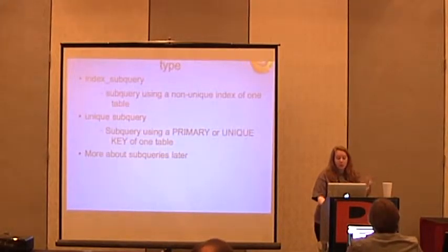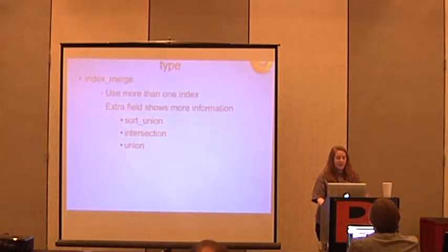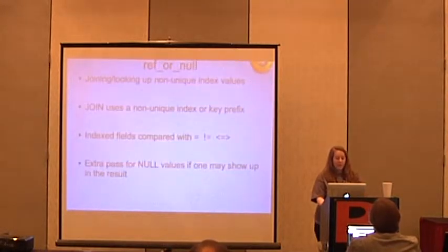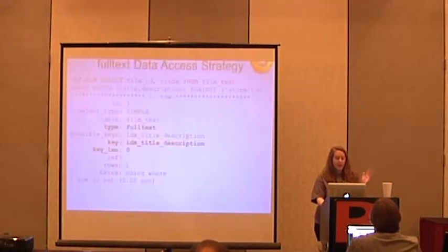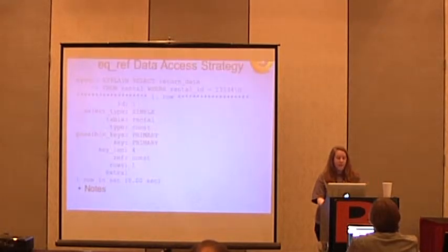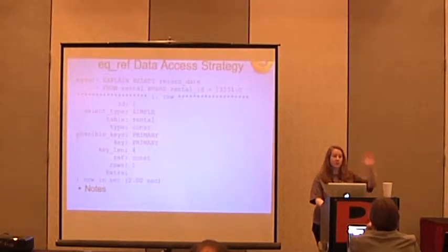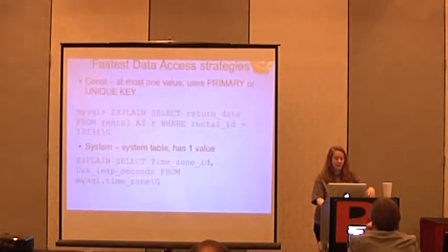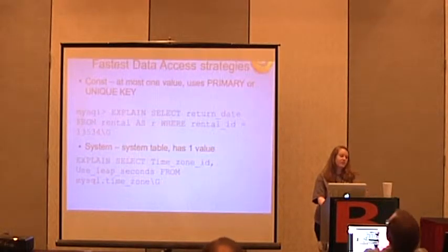There are more type values: INDEX SUBQUERY, UNIQUE SUBQUERY, INDEX MERGE, REF OR NULL, FULLTEXT, REF, EQ_REF. This is all going in order from worst to best. The worst is the full table scan, which I talked about first. The fastest is CONST and SYSTEM.